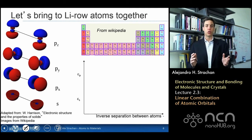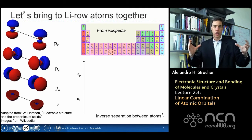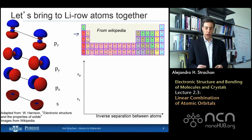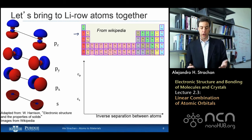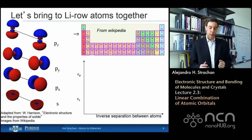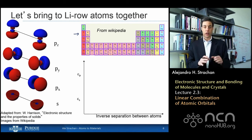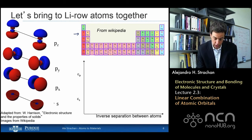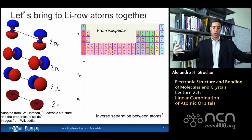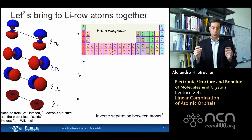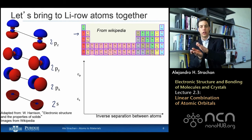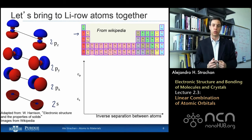Let's now do a slightly more complicated example and bring two lithium-row atoms together. In the lithium row — lithium, beryllium, boron, carbon, oxygen — the outermost shell is the n=2 shell, so I'm going to have 2s and 2p orbitals. I'm going to bring two atoms together and figure out how these orbitals overlap and each split into bonding and anti-bonding states.